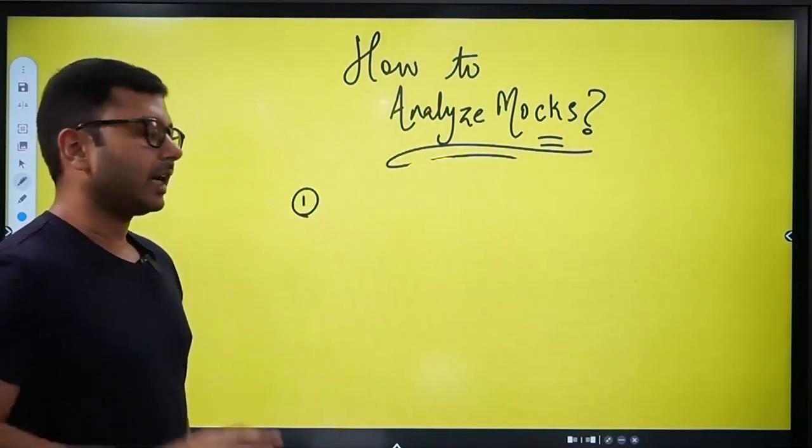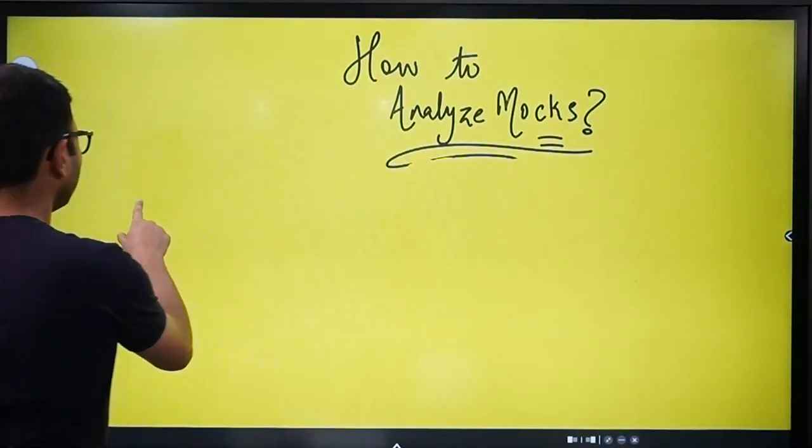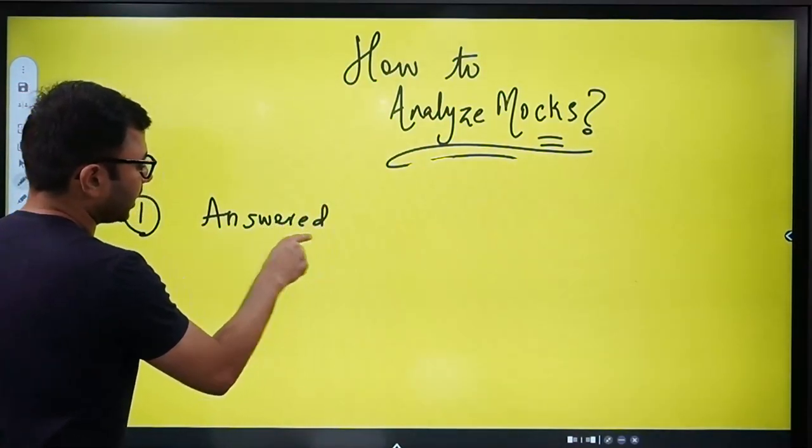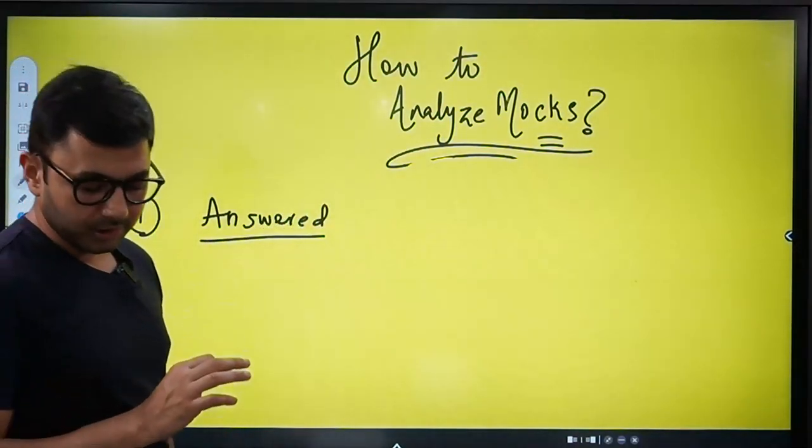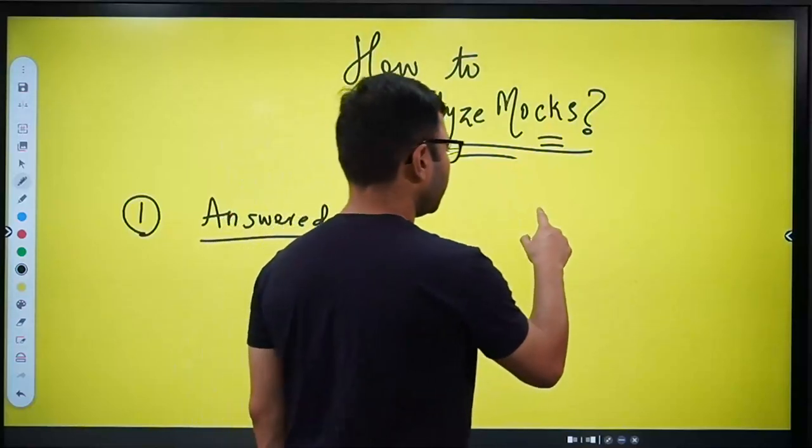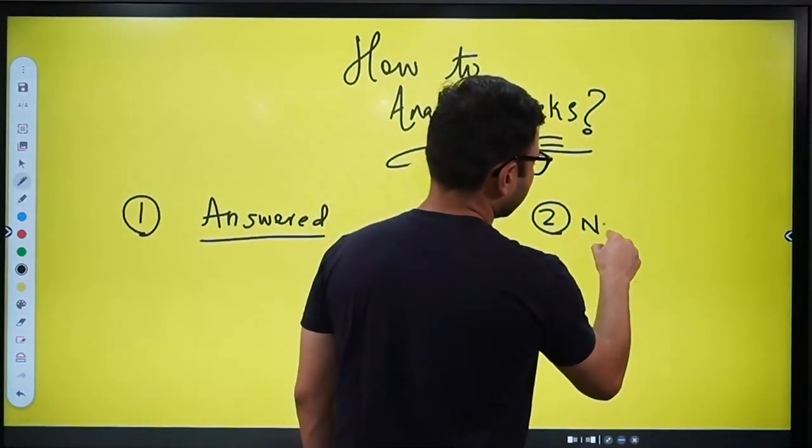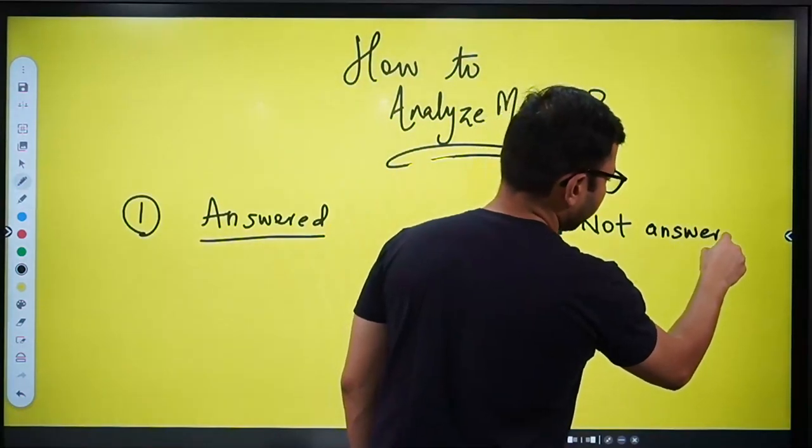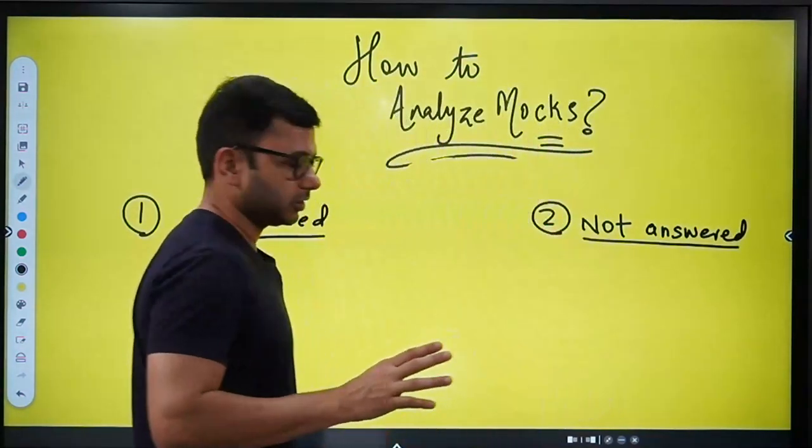So, first category of our questions will be answered category. The questions that we have attempted and answered. It's normal, either you will answer, or you will not. The second category I mentioned is not answered. You will have only two categories, answered, not answered. Right?